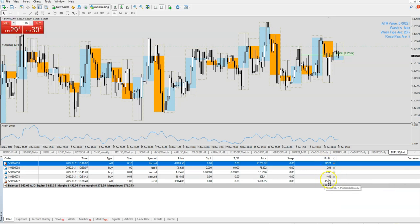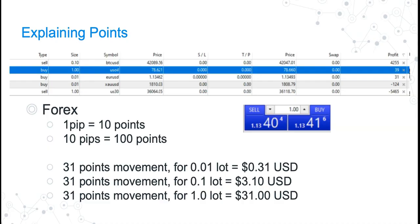So why is it that I want to talk about points? That's because in the Tor Trade Manager, we are using points as the determination of a measurement of our profit and loss. So we need to know what is a point. So let me just discuss what is points in this slide here. What I did is I captured the same trades — Bitcoin, US oil, EURUSD, gold, and US30, which is the CFD for the Dow Jones — and to display the profit in points.